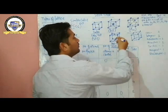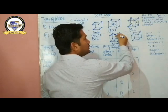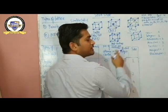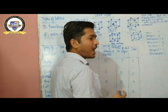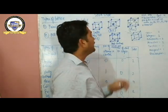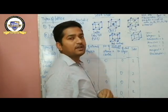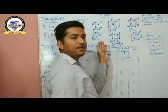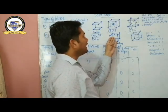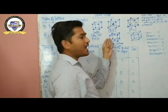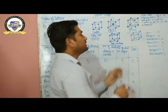What is the meaning of end-centered cubic cell? In this case, two atoms must be present at two different opposite faces. That type of arrangement is known as end-centered cubic cell. That means in end-centered, there are eight corner atoms as well as two atoms present at two different sides.